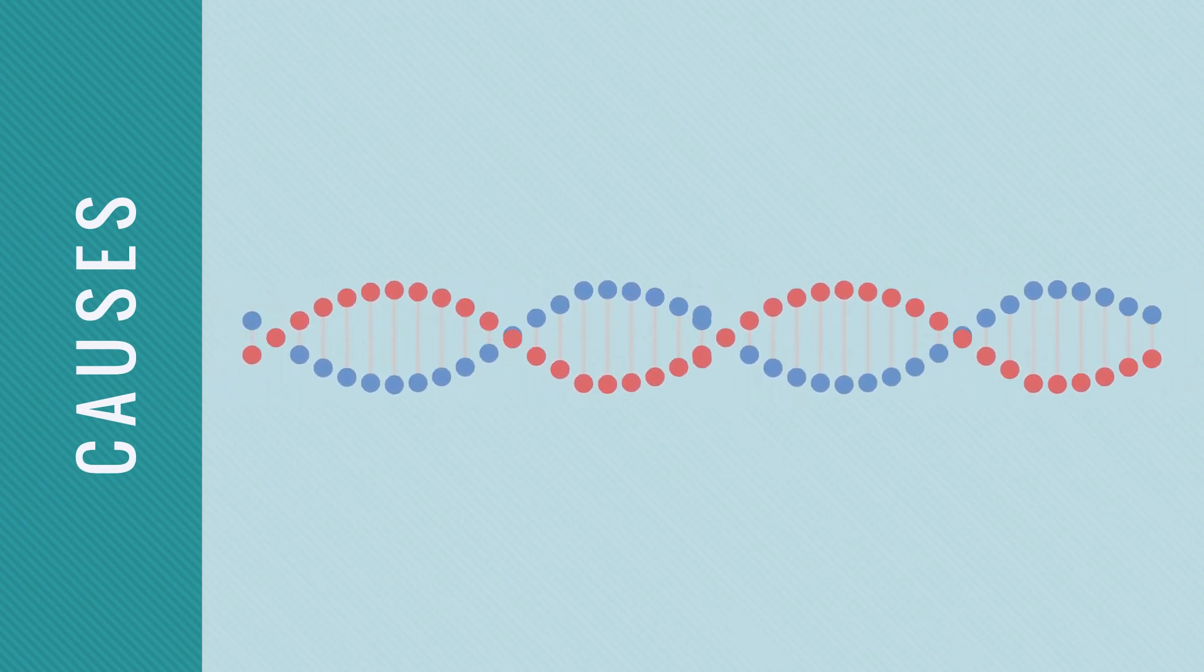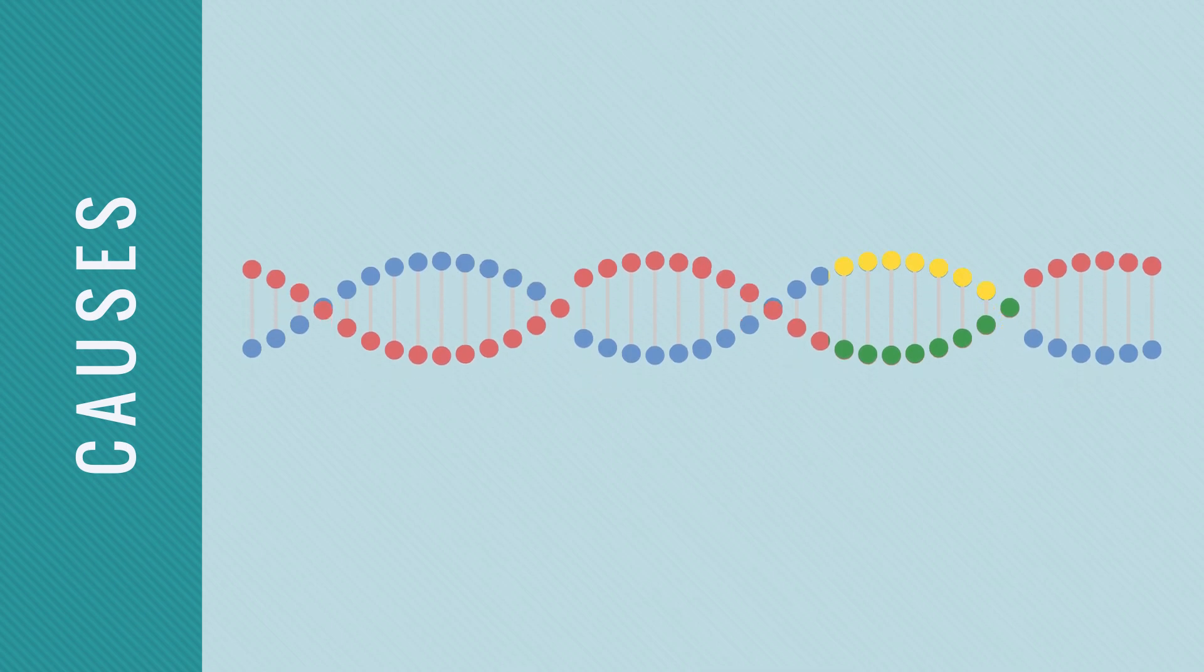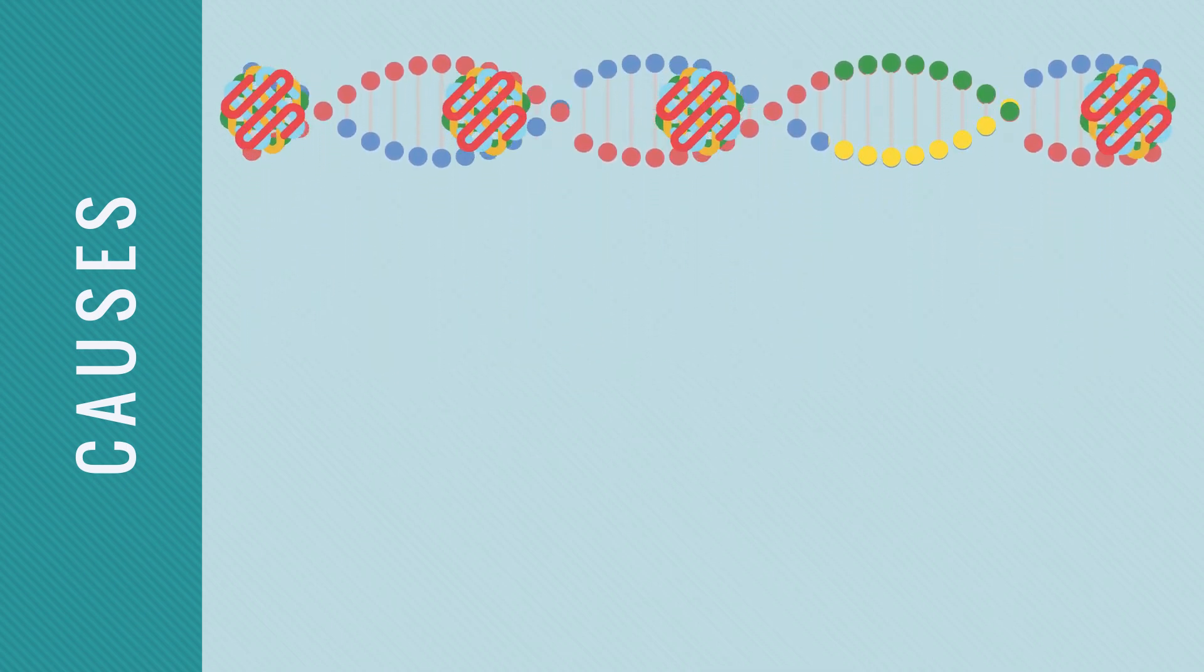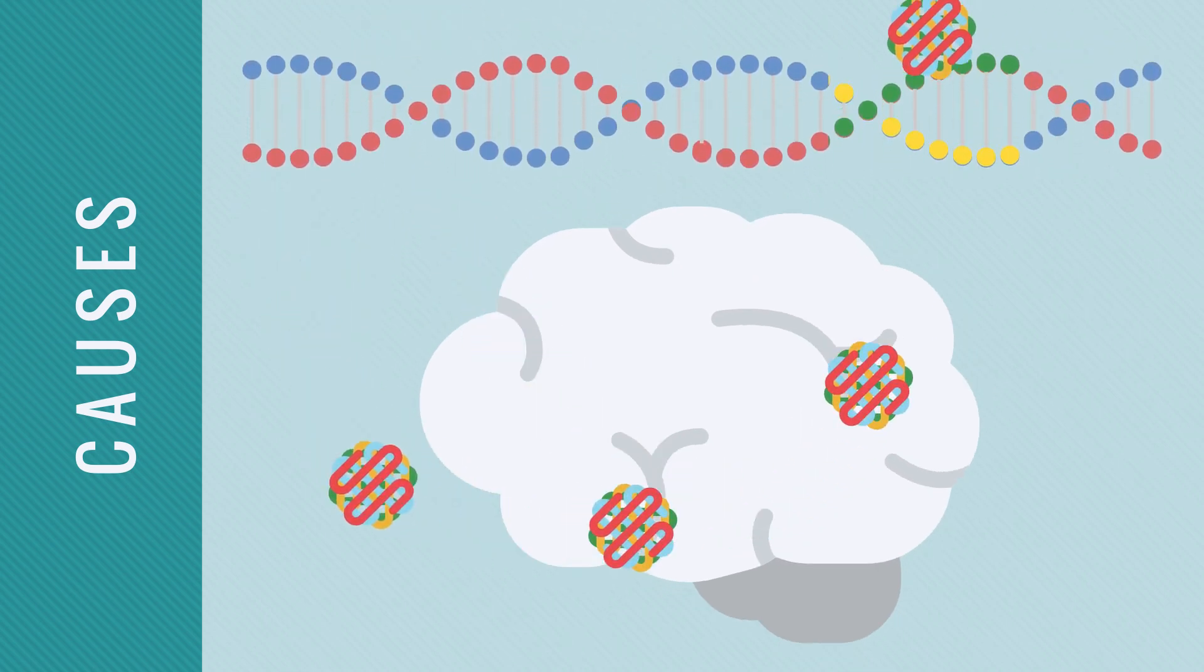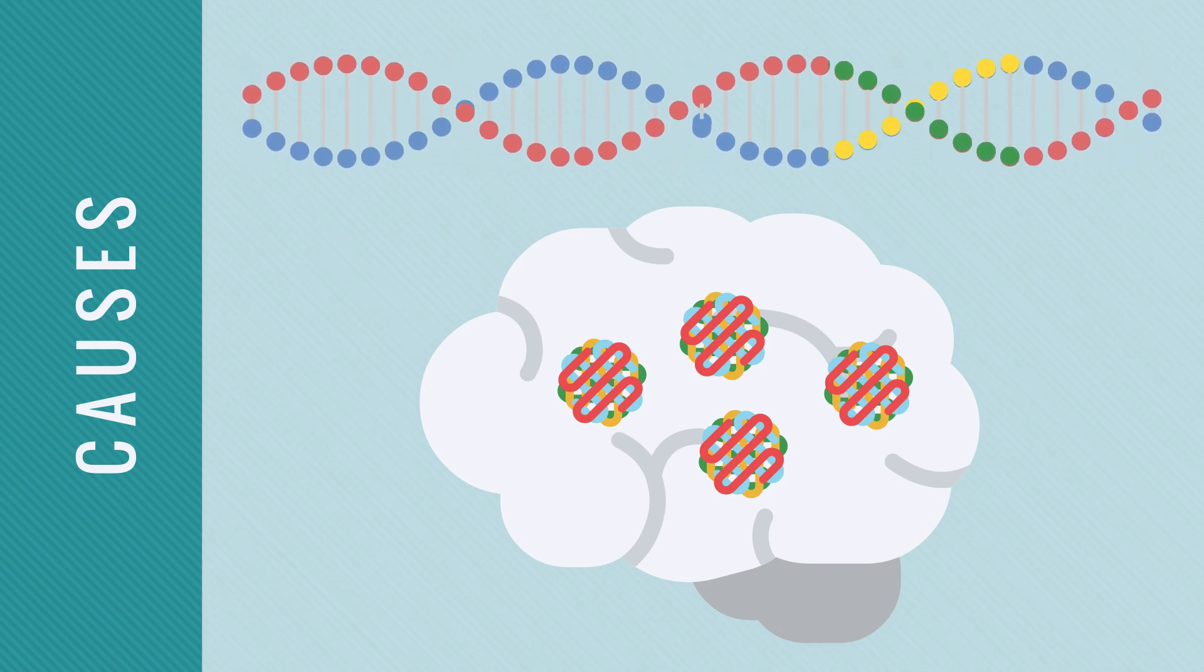Fragile X is an inherited syndrome caused by mutations in a gene called FMR1. When functioning normally, the FMR1 gene makes a protein called FMRP that is most abundantly found in cranial nerve cells and is essential to normal cognitive development.